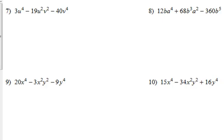3u to the 4th minus 19u squared v squared minus 40v to the 4th. Now, at first glance you think, oh, GCF, but no, not really, because not every term has, obviously with the numbers there's no GCF, but when it comes to the variables, two of them have u's and two of them have v's, but not all three of them have either one, so we can't do a GCF here.